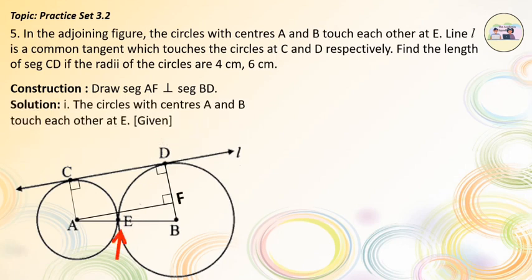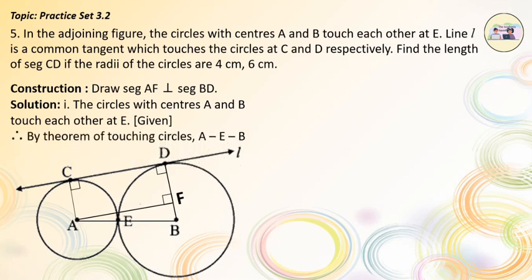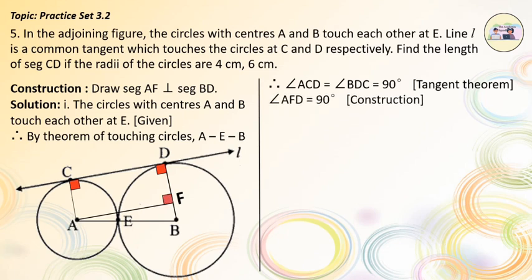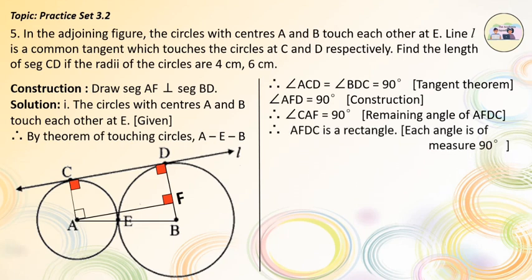Solution. The circles with centers A and B touch each other at E, which is given. Therefore, by the theorem of touching circles, A, E, B are collinear. Therefore, angle ACD = angle BDC = 90 degrees, by the tangent theorem. Therefore, angle AFD = 90 degrees by construction, and angle CAF = 90 degrees since it is the remaining angle of quadrilateral AFDC. Therefore, AFDC is a rectangle, with each angle of measure 90 degrees.